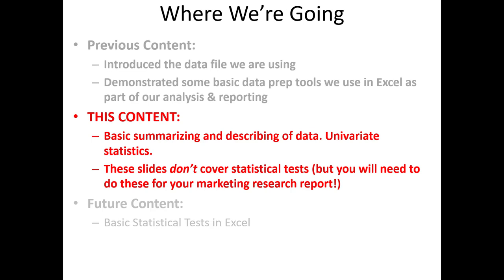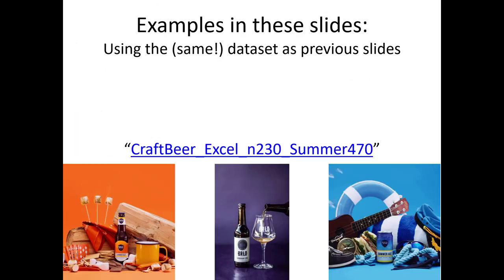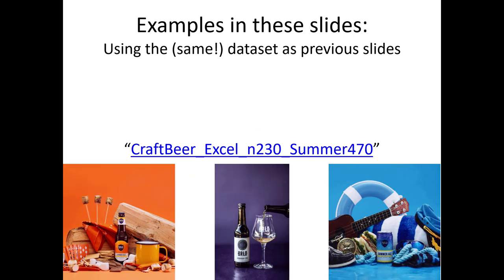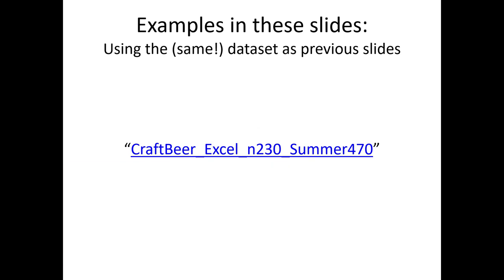These slides won't cover statistical testing such as ANOVA or independent sample t-tests — we'll get to those a little later. As always we're using the craft beer Excel N23 summer 470 data set. The link is available, and you probably have it saved on your machine at this point.